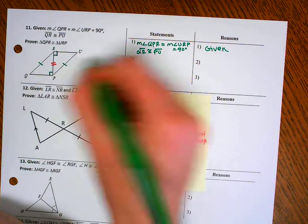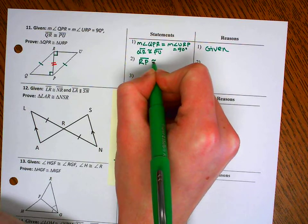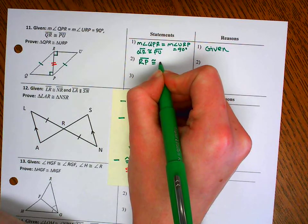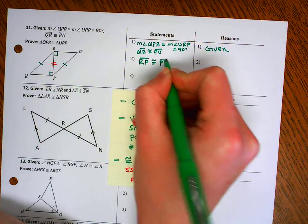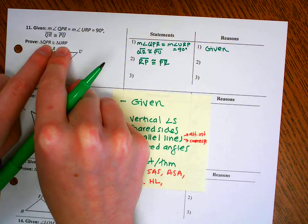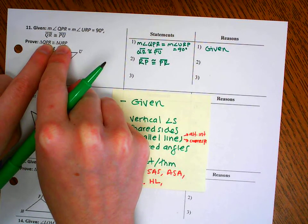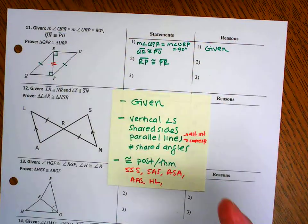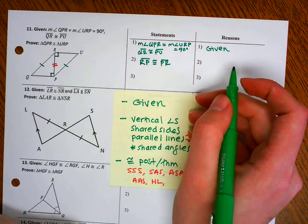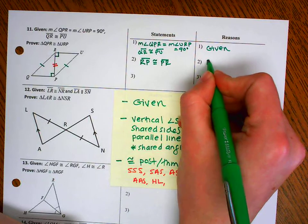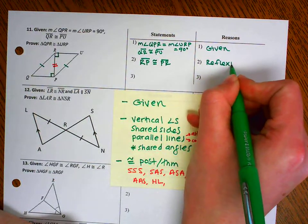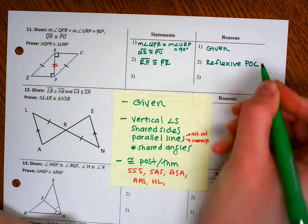So let's keep going. I need to say that RP is congruent to itself. You could either do RP again or PR. The reason I'm switching it is if you look at our proof, this is our congruency statement, PR matches up with RP. So that's why I'm doing that. We'll talk more about that in a day or so. But that's my reflexive property of congruency. Something's congruent to itself.